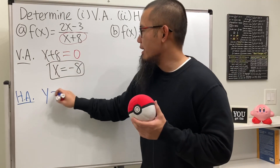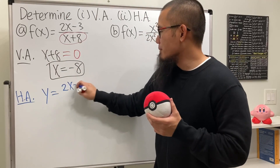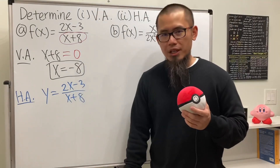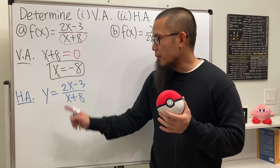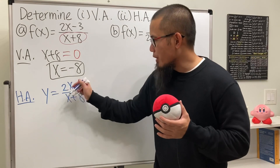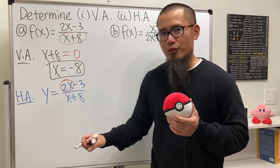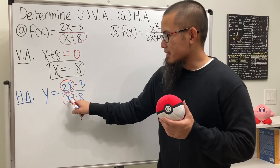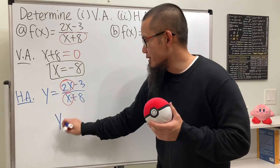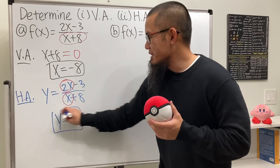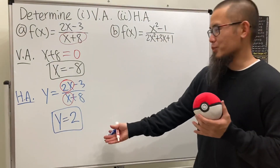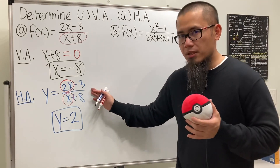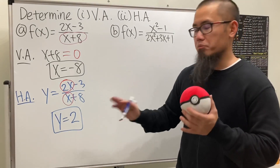For the horizontal asymptote, write f(x) as y: (2x − 3) / (x + 8). We just care about the highest power of x on the top, which is 2x, and the highest power of x on the bottom, which is x. The x's cancel, and we get y equals 2. That's it — the pre-calculus way to do it, nice and simple.